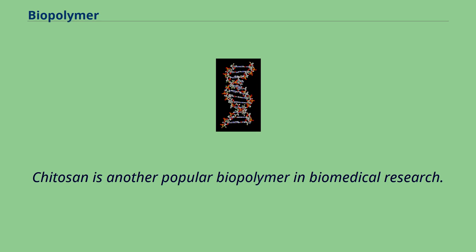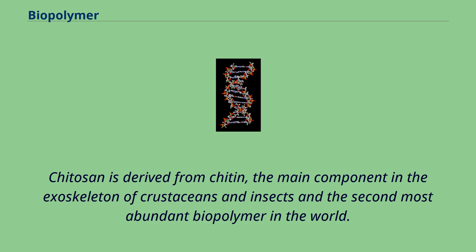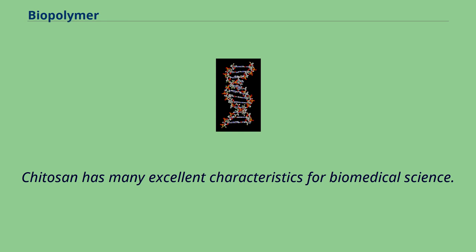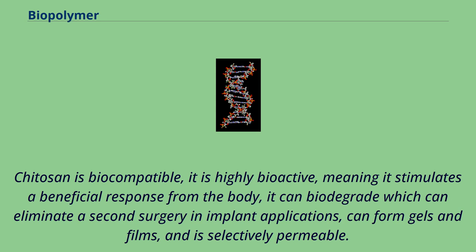Chitosan is another popular biopolymer in biomedical research. Chitosan is derived from chitin, the main component in the exoskeleton of crustaceans and insects, and the second most abundant biopolymer in the world. Chitosan has many excellent characteristics for biomedical science: it is biocompatible, highly bioactive — meaning it stimulates a beneficial response from the body — it can biodegrade which can eliminate a second surgery in implant applications, can form gels and films, and is selectively permeable.